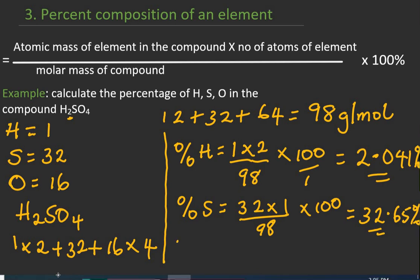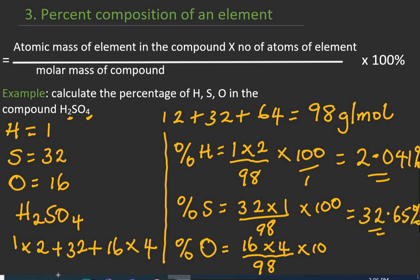The percentage composition of oxygen: atomic mass 16, with 4 atoms, so 16 times 4 divided by 98 times 100. Punching this into the calculator: 64/98 × 100 gives 65.31%. If you sum up all these percentages you should get 100. This is generally how to find the percent composition of elements in a compound — they can ask you for one, two, or all elements.